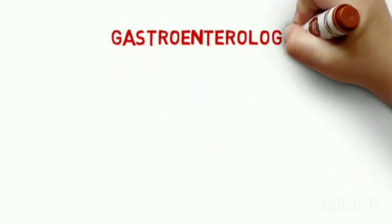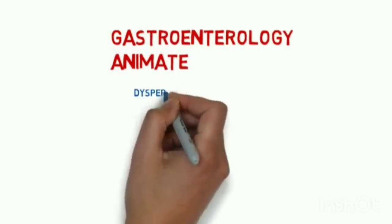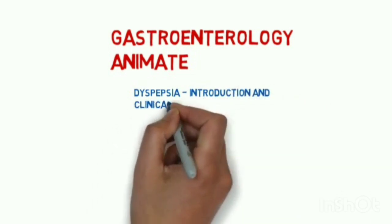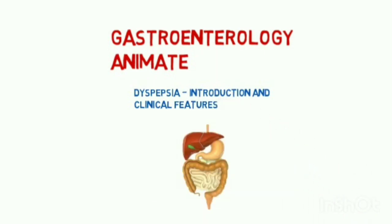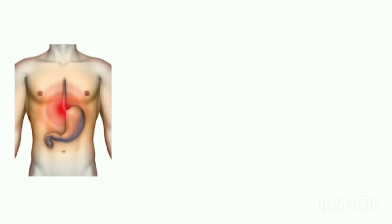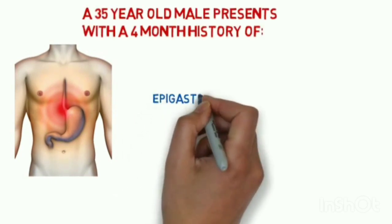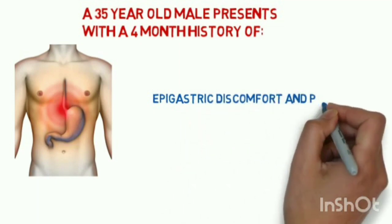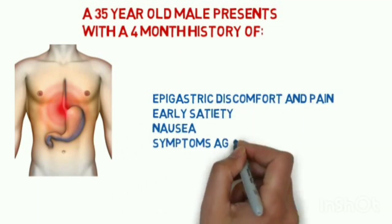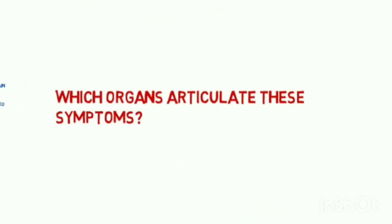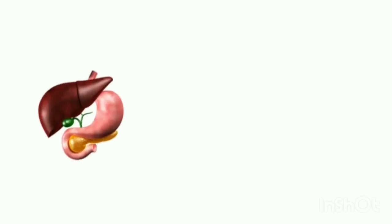Gastroenterology: an introduction to dyspepsia and its clinical features. Here is the GIT system. A 35-year-old male presents with a four-month history of epigastric discomfort, pain, bloating, and nausea — symptoms aggravated by food. Which organs articulate these symptoms?